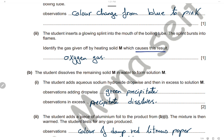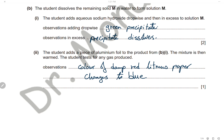The student dissolves the remaining solid M in water to form solution M, then adds aqueous sodium hydroxide dropwise and then in excess. With chromium ions, adding sodium hydroxide gives a green precipitate. Because chromium hydroxide is amphoteric, the precipitate dissolves in excess NaOH. Adding a piece of aluminium foil to the product and warming — the gas produced turns damp red litmus paper blue, confirming ammonia, which is the test for nitrate ions.